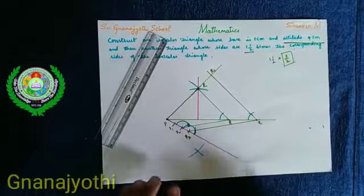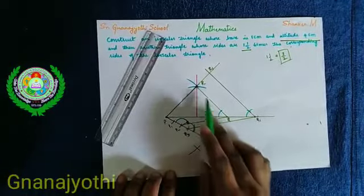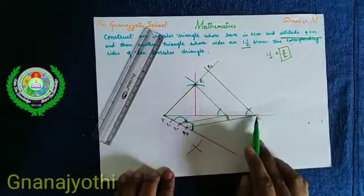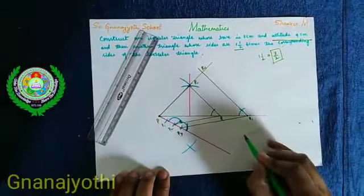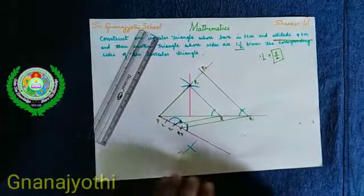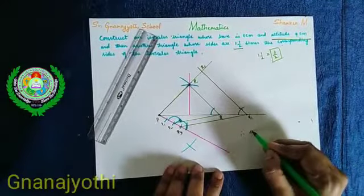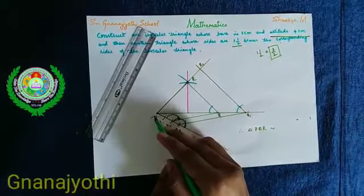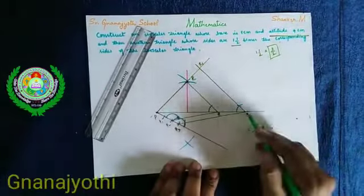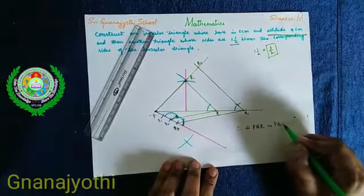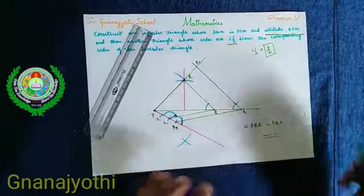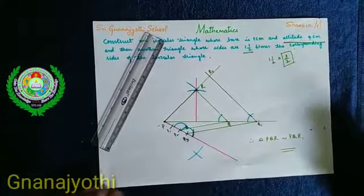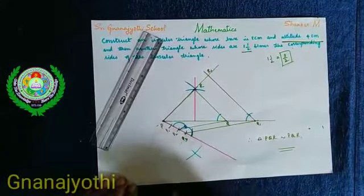Therefore now we can see two triangles: one is triangle PQR and another one is triangle PQ1R1. Therefore, triangle PQR is similar to triangle PQ1R1. This is the way of constructing when the altitude is given.